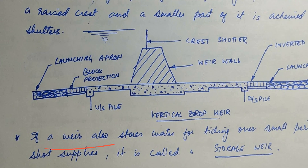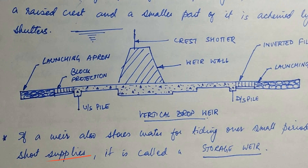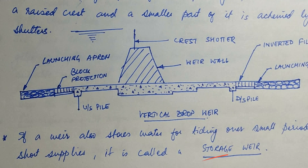If a weir also stores water for tiding over small periods of short supplies, in that case it is called a storage weir. A dam is actually used for the same purpose — storage of water. But the difference between a weir and a dam is that a dam is of more height and stores water for a longer duration, while a weir stores water for a very short duration.